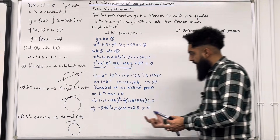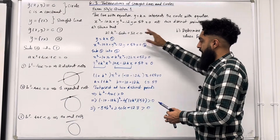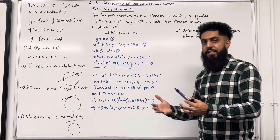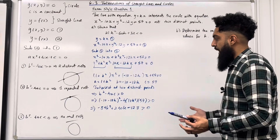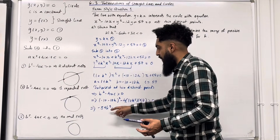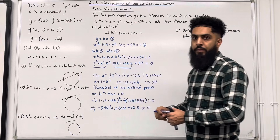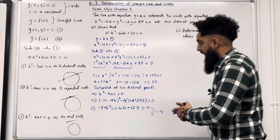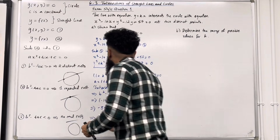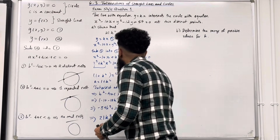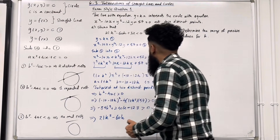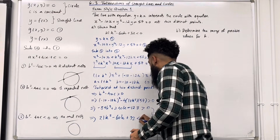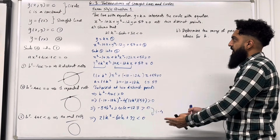To go from this inequality to the required one — noting the sign change from greater than to less than — I divide the whole inequality by negative 4. When dividing by a negative number, the inequality flips. The first term becomes 21k squared, the second becomes minus 60k, and the third becomes positive 32. So 21k squared minus 60k plus 32 is less than 0, which is the result required in part A.